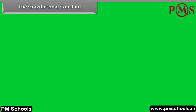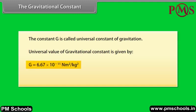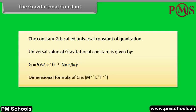The constant G is called the universal constant of gravitation. Its value is G = 6.67 × 10⁻¹¹ N·m²/kg². The dimensional formula of G is M⁻¹L³T⁻².